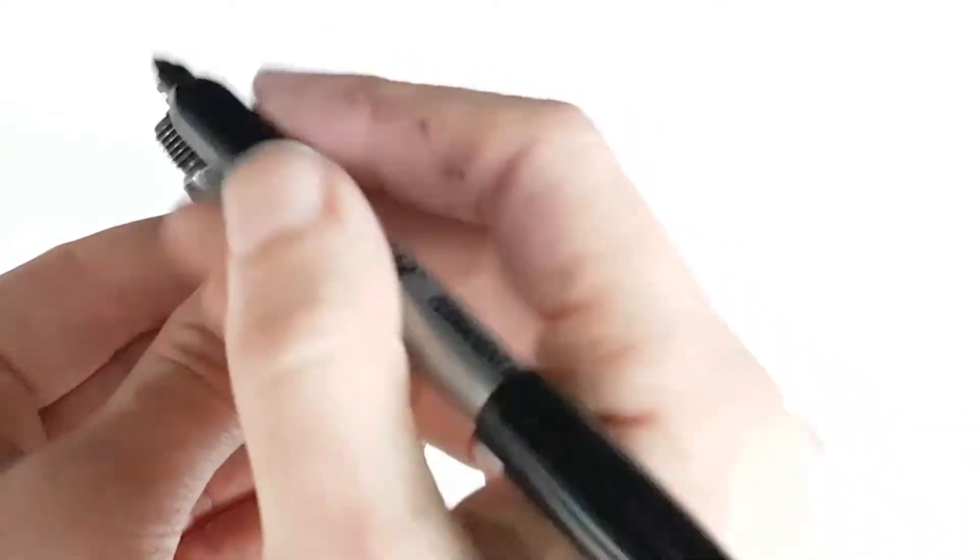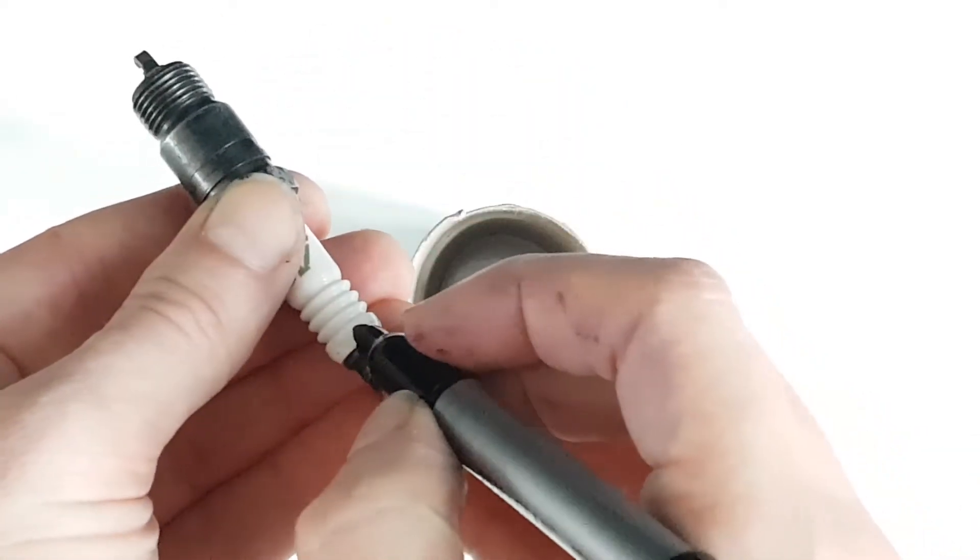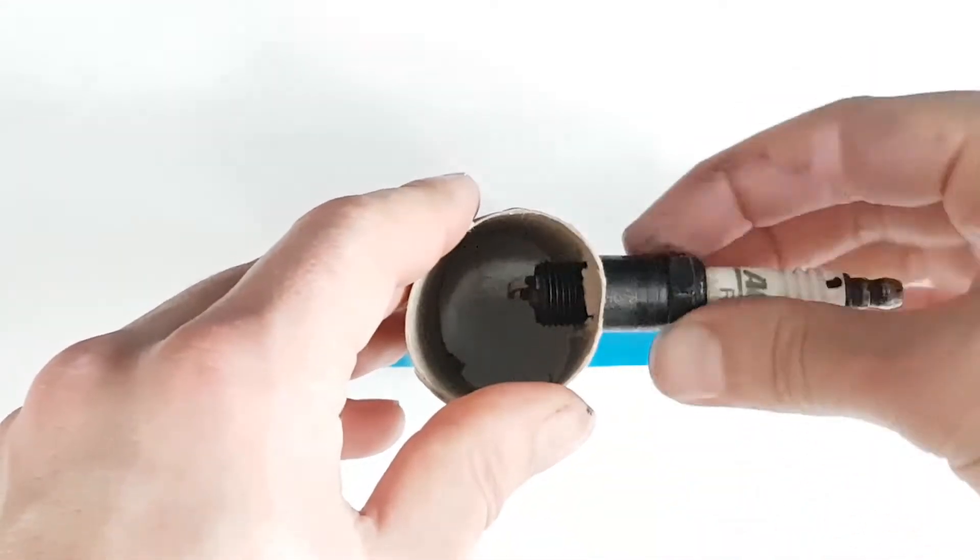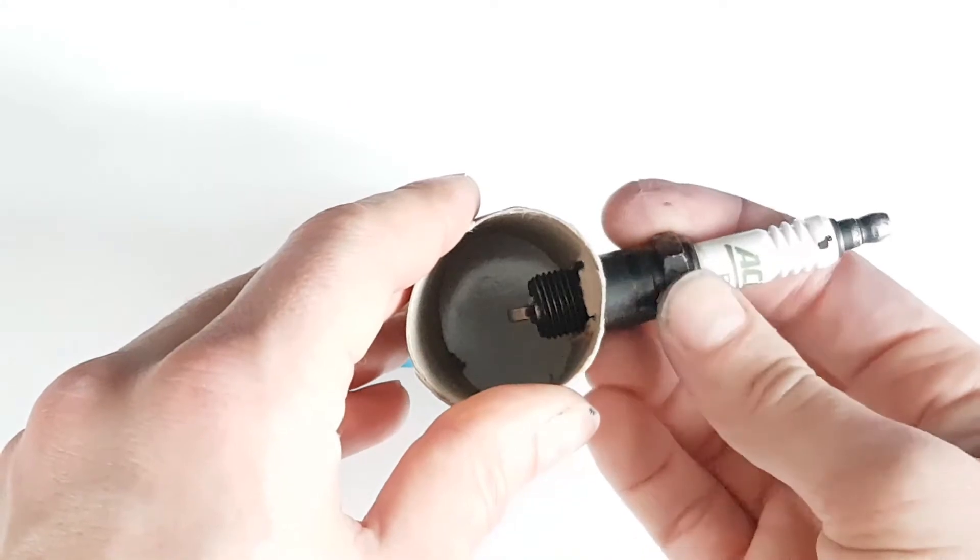What we do is we have a look at where the tip of the spark plug is and mark it along here. That way when that's installed in the cylinder we can see where the orientation is.